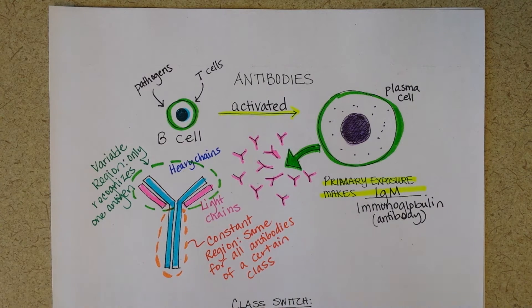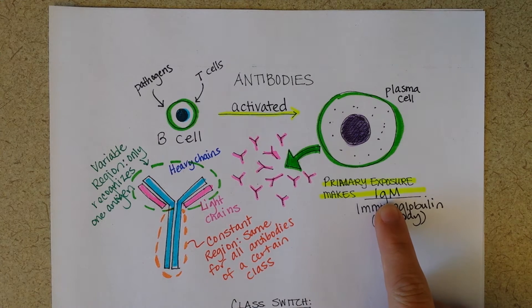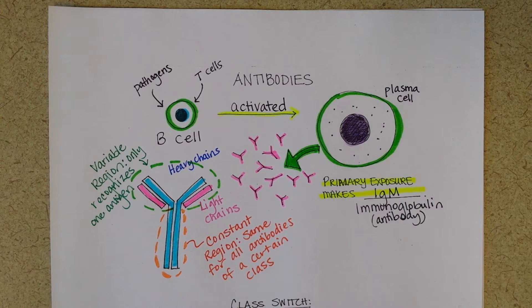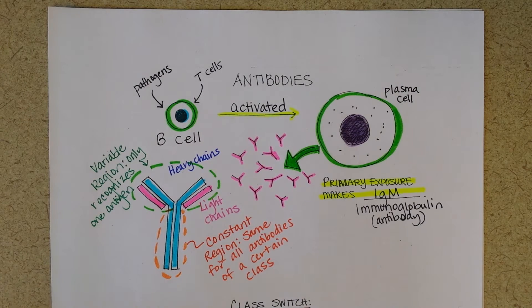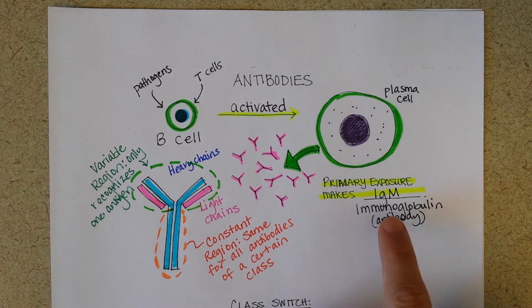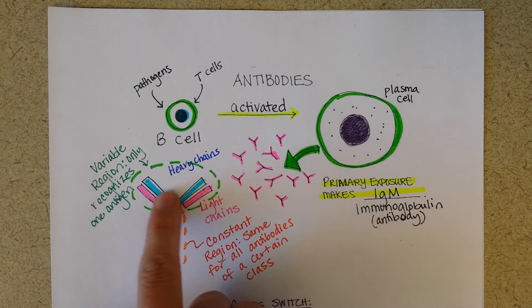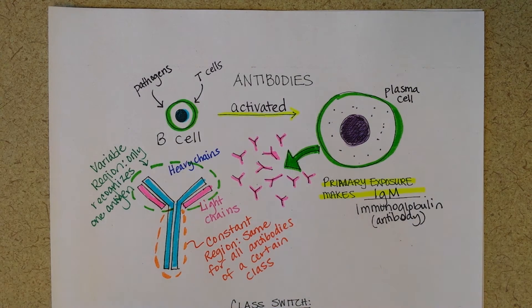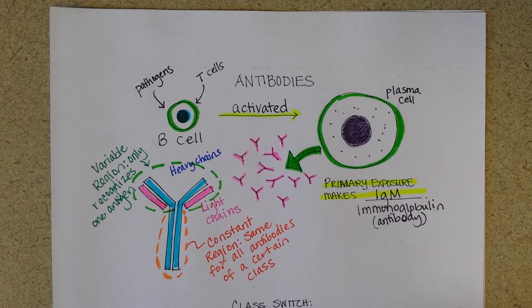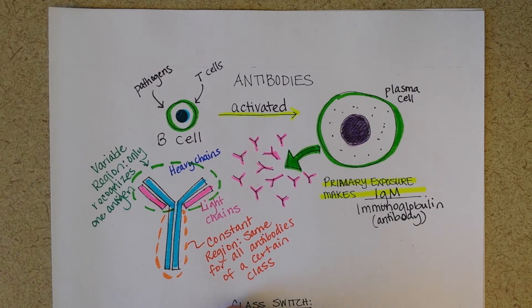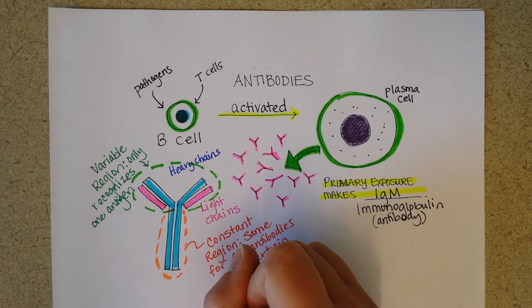What usually happens is in the primary exposure, mostly the plasma cells make IgM antibodies. However, stimulation by T cells can specifically indicate to a plasma cell what kind of antibodies it should ultimately be making. So just to get the ball rolling, the plasma cells are all ready to go by producing IgM antibodies that have this variable region that matches whatever the particular pathogen of the day is.